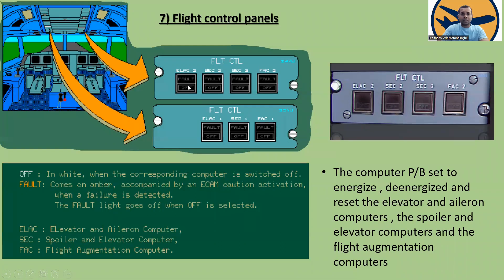The flight control panel includes ELEC 2, SEC 2, SEC 3, FAC 2, ELEC 1, SEC 1, and FAC 1. The computer push buttons serve to energize, de-energize, and reset the elevator and aileron computers (ELAC), spoiler and elevator computers (SEC), and flight augmentation computers (FAC). OFF in white indicates the computer is switched off; FAULT in amber with a caution activation indicates a failure is detected.